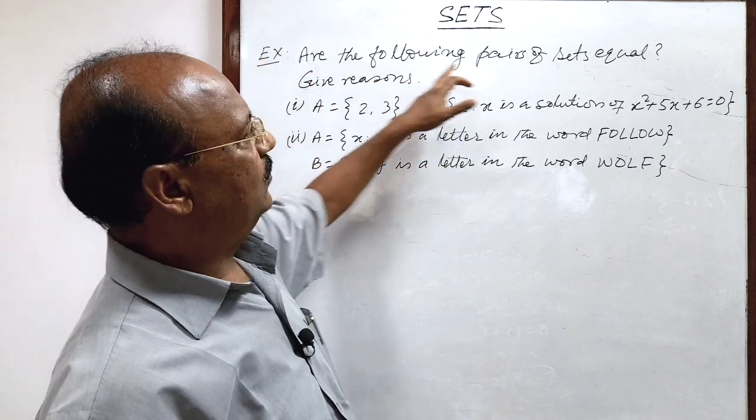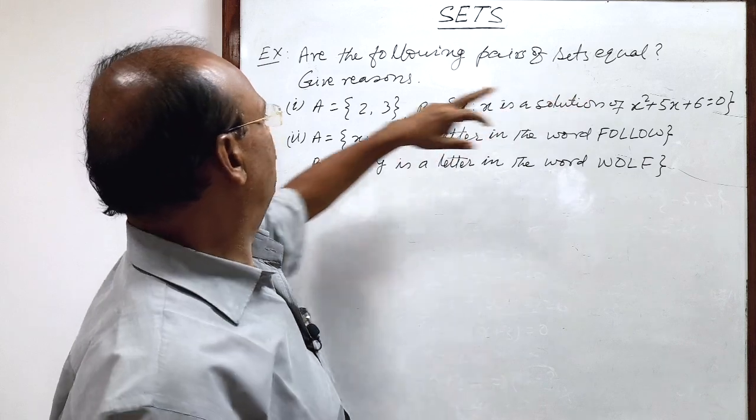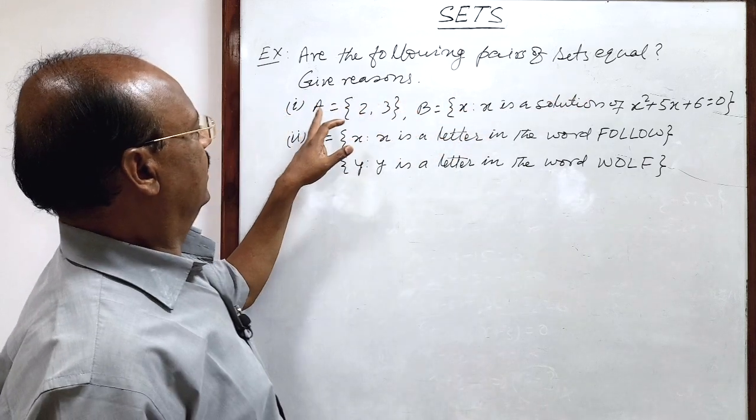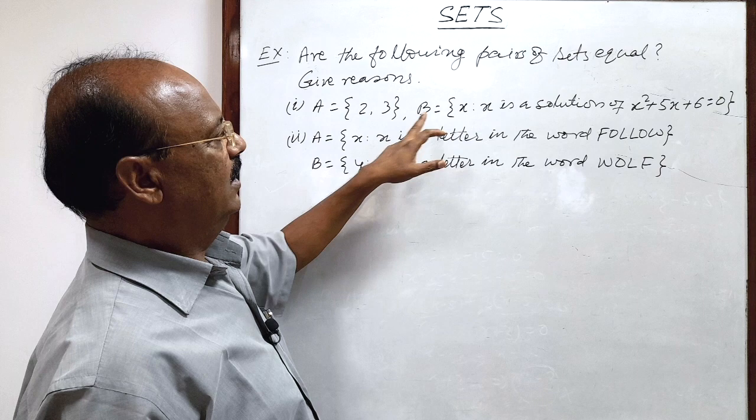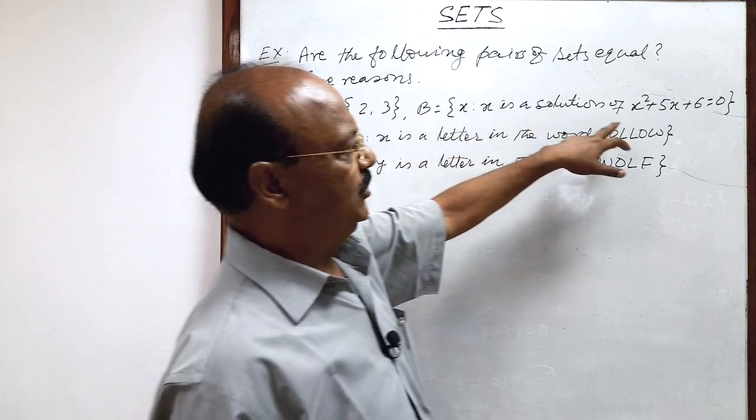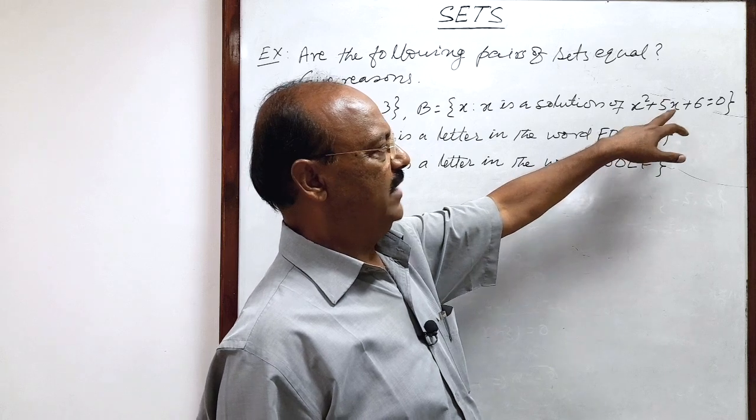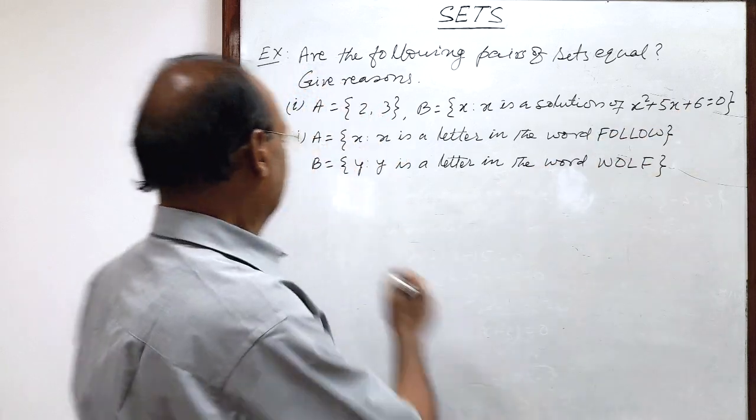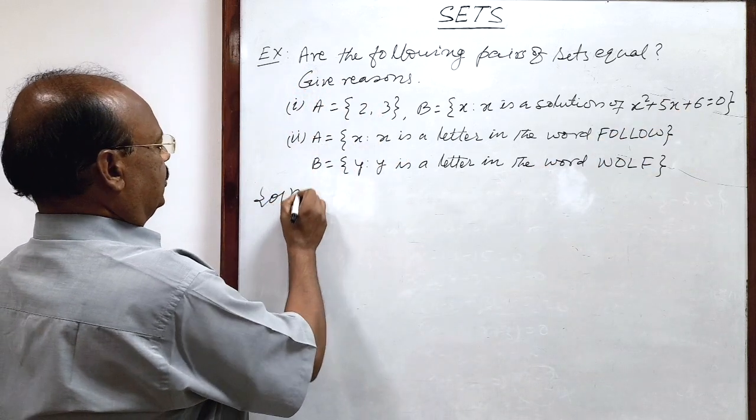The question is: are the following pairs of sets equal? Give reasons. Set A has elements 2, 3 and set B consists of x such that x is a solution of x² + 5x + 6 = 0. So let us start with question number 1.